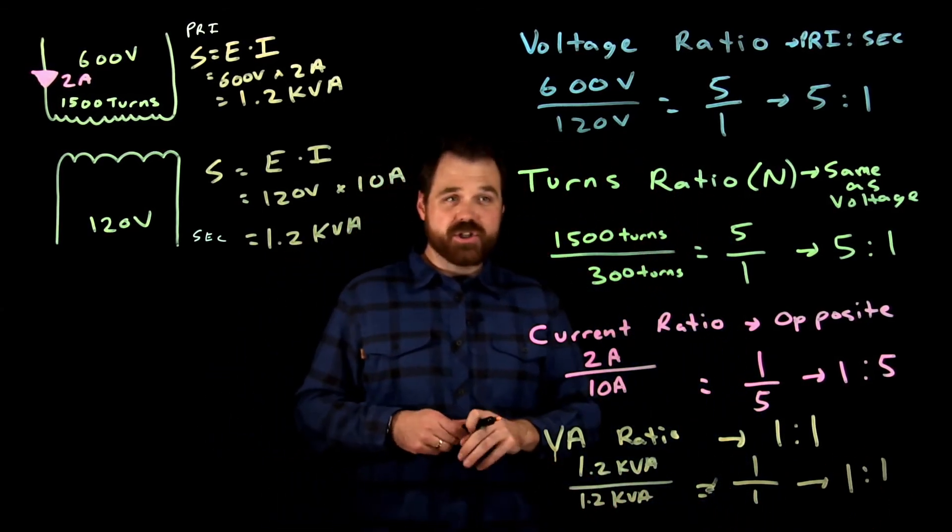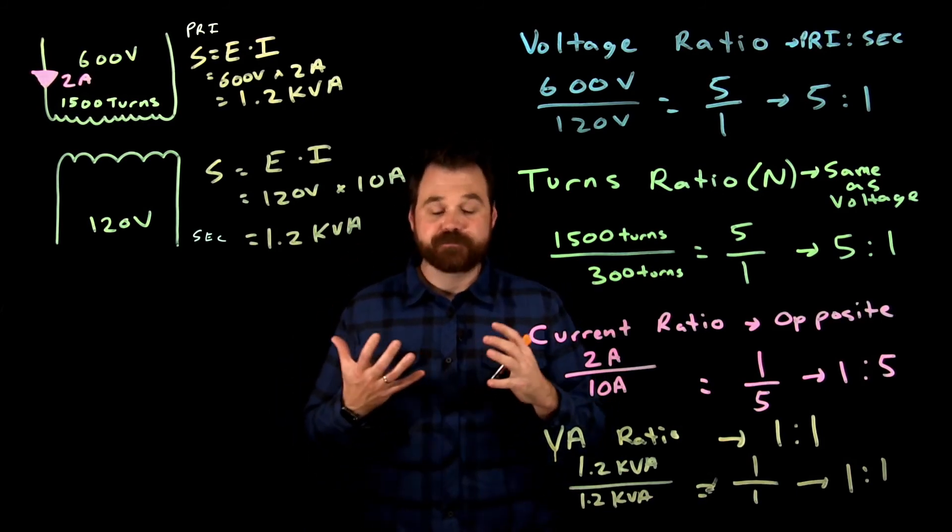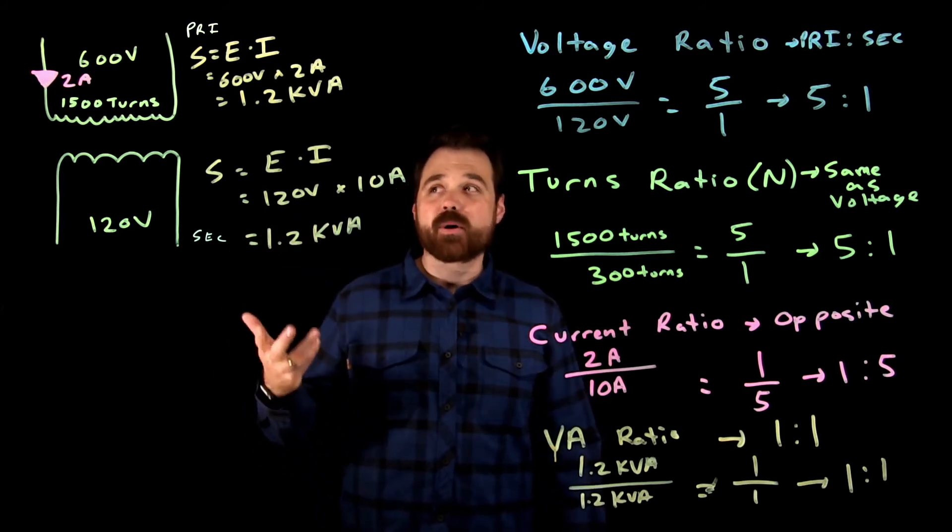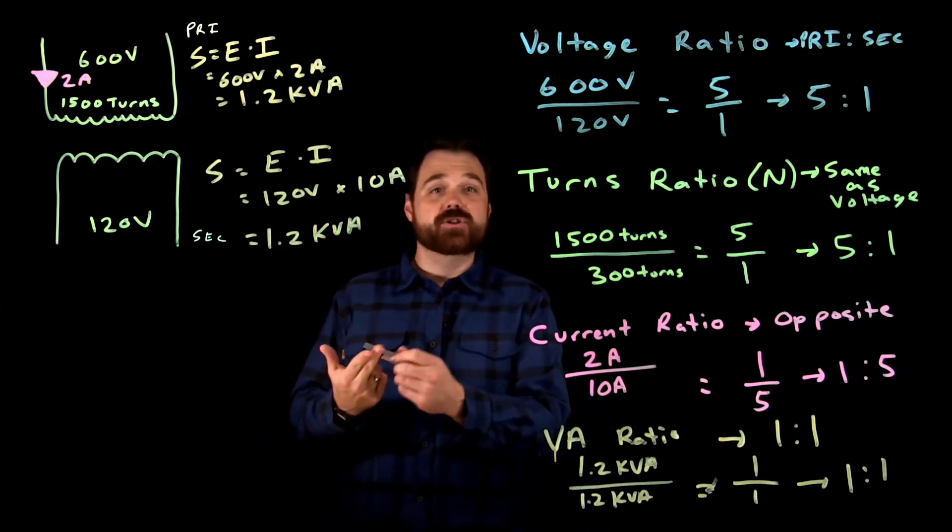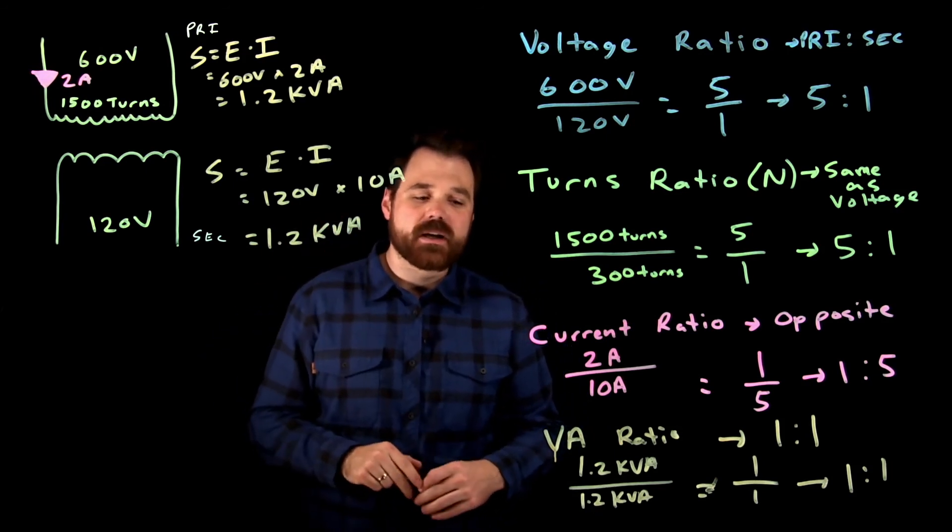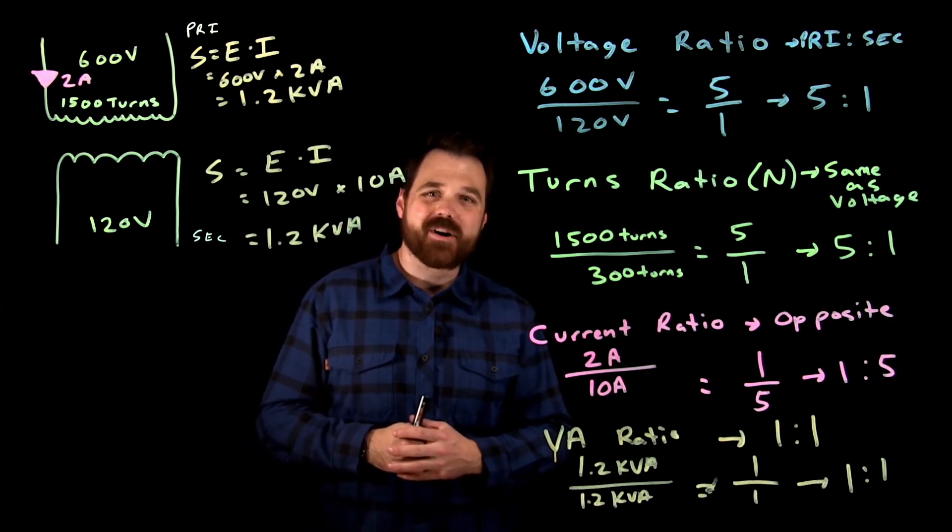That's a one to one ratio. Now that's an ideal transformer. There's going to be a couple of losses and things going on. But that is the basics of our four different transformer ratios. So we have our voltage and our turns ratio, which are the same. The current ratio, which is opposite. And our volt amp ratio or our apparent power ratio, which is always going to be that one to one.